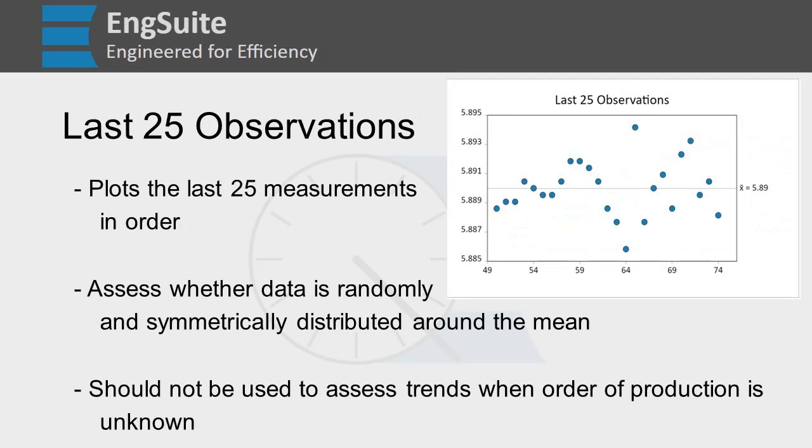Let's look at another graph: the last 25 observations. This is self-explanatory - it's the last 25 measurements plotted in order. This assesses whether the data is randomly and symmetrically distributed around the mean at the end of your process. Like the individual value plot and moving range plot, don't use this if you don't know the order parts were in production. If you do know, this is incredibly helpful to figure out if your data is random or has trends. We want random data because we'd likely stay around the mean, whereas if we have a trend and continue it out, we'll eventually end up out of spec.